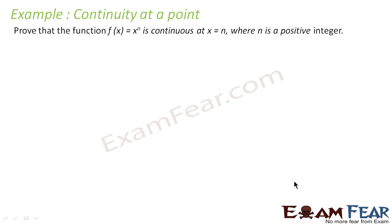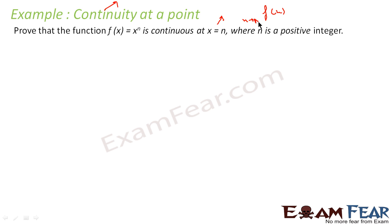We will take one more example just to prove that continuity is always defined at a point. When we say a function is continuous in its domain, that means you take any point in the domain and the function is continuous there. We will discuss that later, but just now understand that continuity is defined at a point. So we have the function x to the power n, and we have to prove that this function is continuous at x is equal to n. So for the function to be continuous, the limit of f(x) as x tends to n should be equal to f(n).